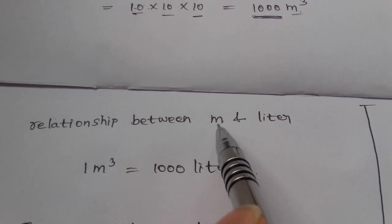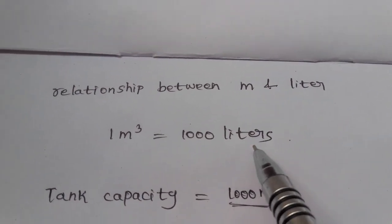The relationship between meter and liter: 1 meter cube is equal to 1000 liters.